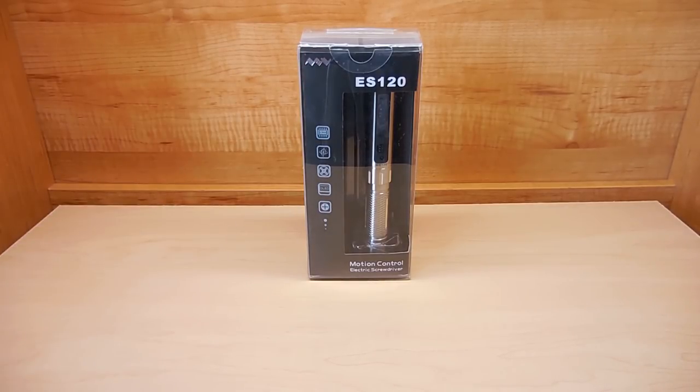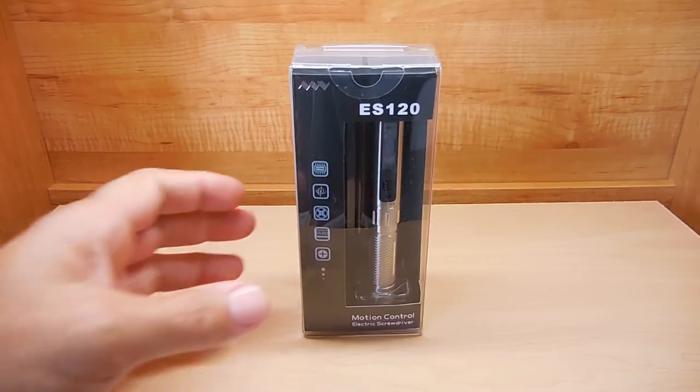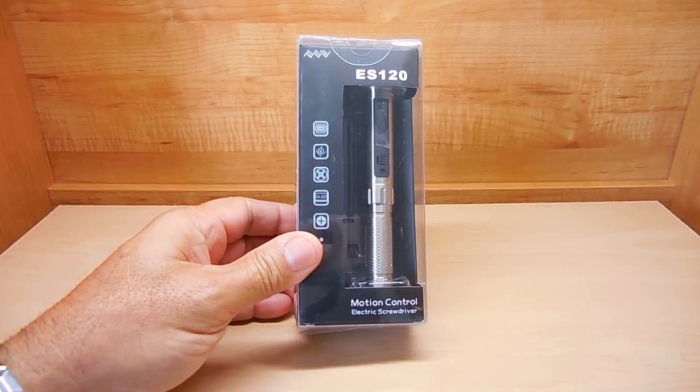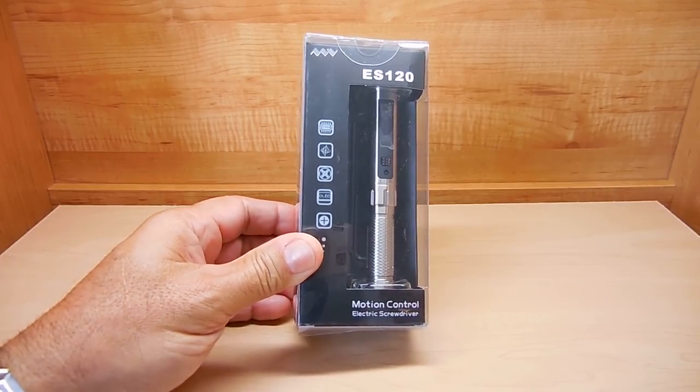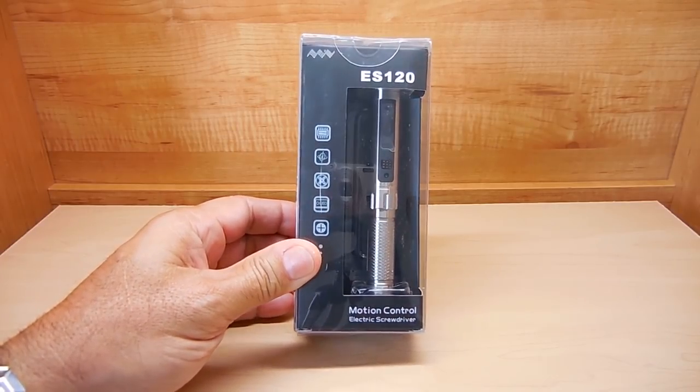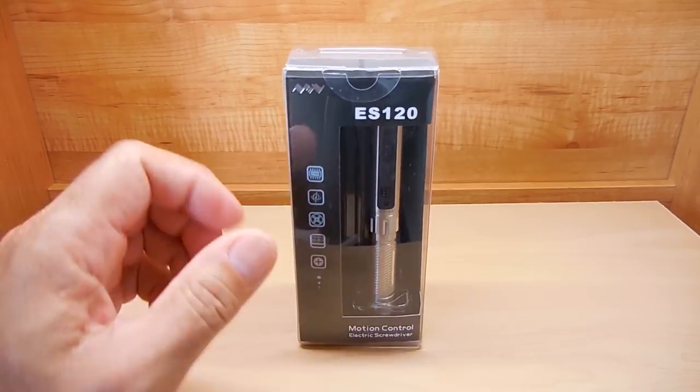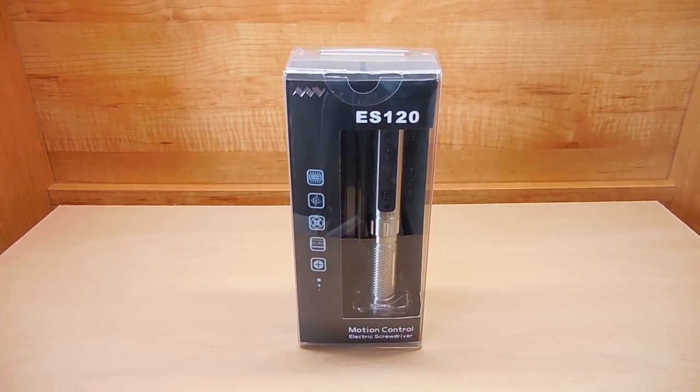Okay, let's take a closer look at this, open it up, and then check it out. What this is is a motion controlled electric screwdriver. It has a few different torque settings and it also has a couple of different speed settings, and it's all adjusted by the motion of your hand. Let me open this up, take everything out of the box, show you what's included, and then show you how it works.